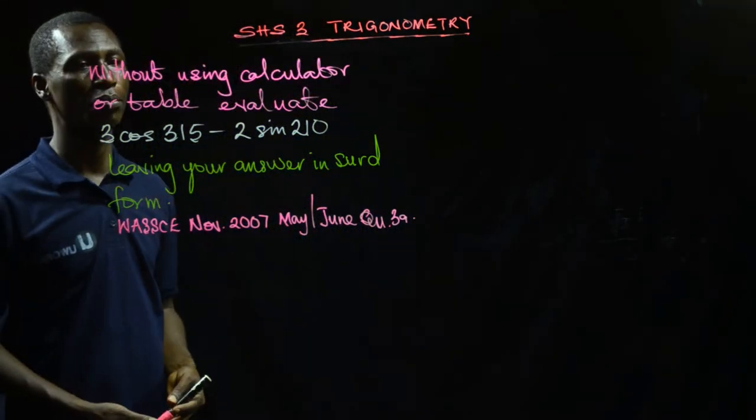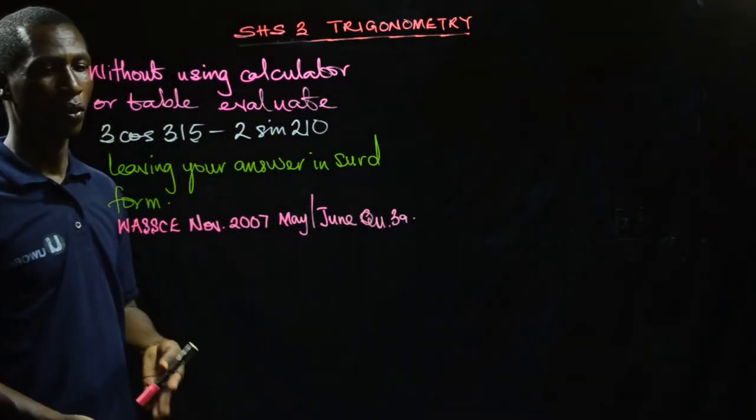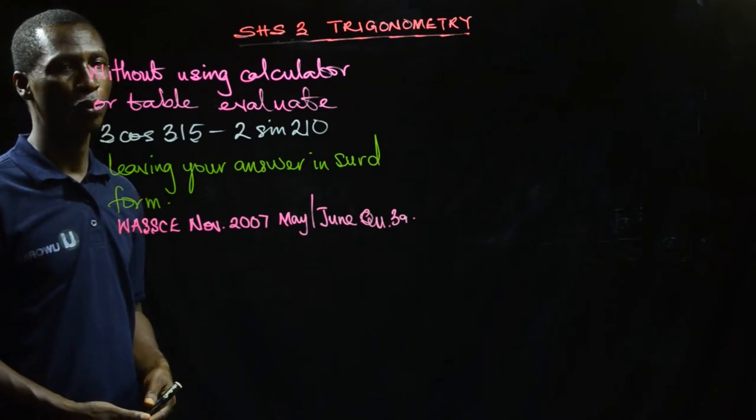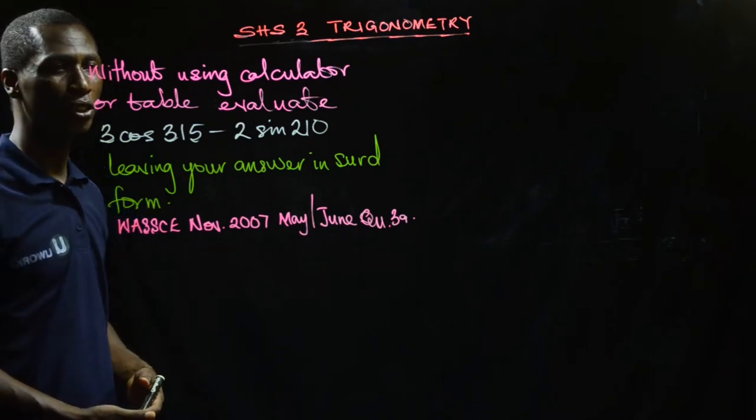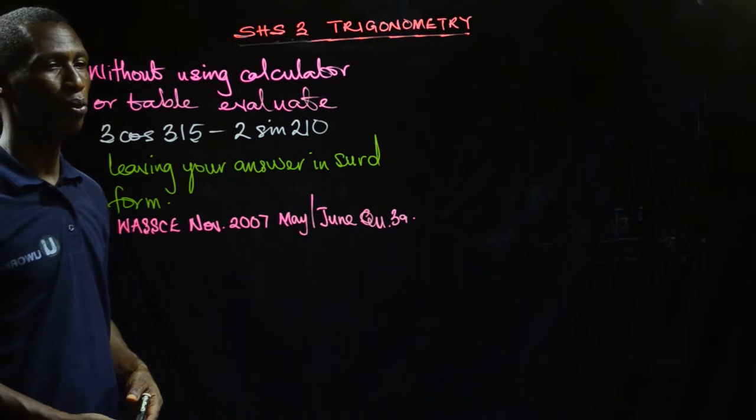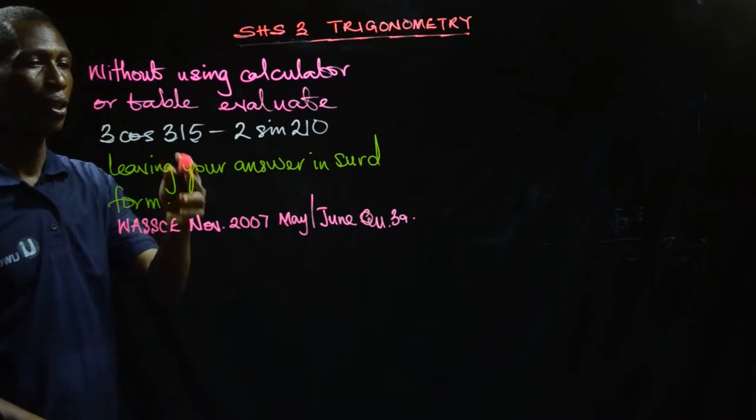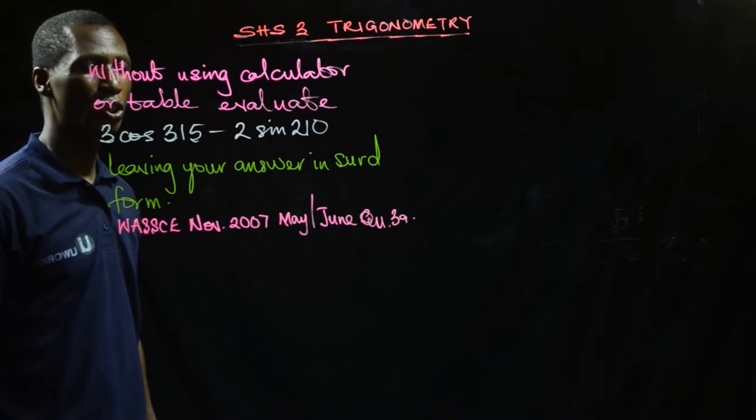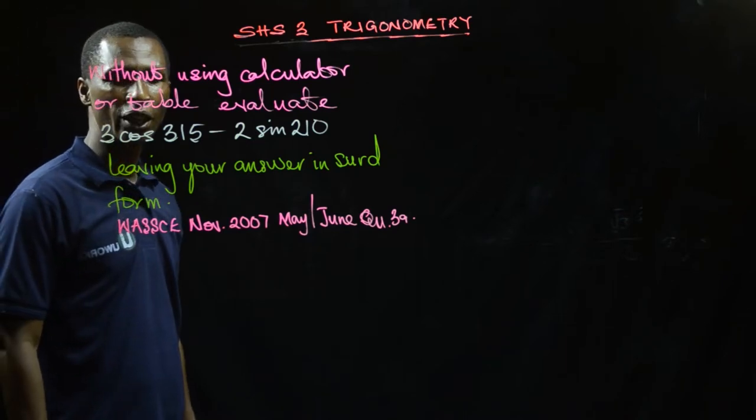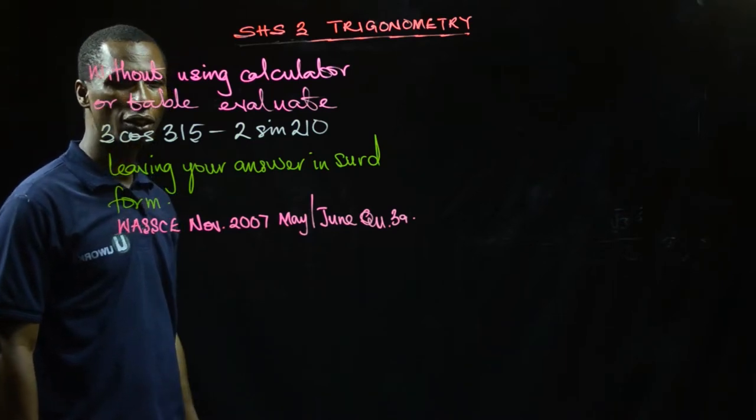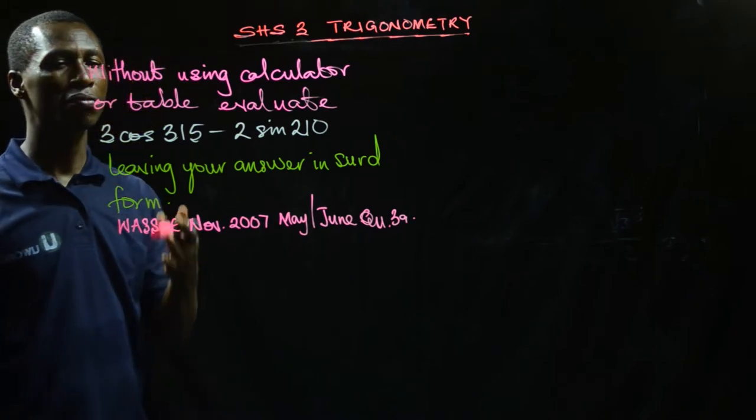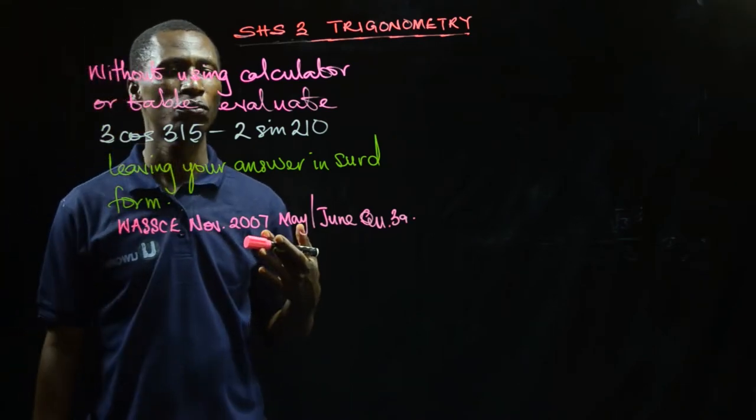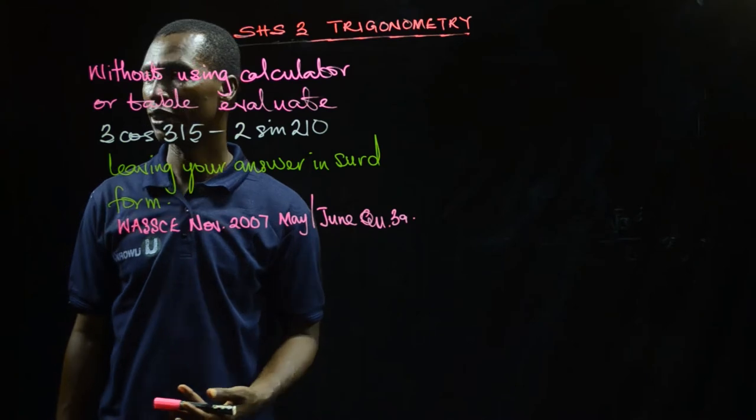Okay, so this is a CSEC question on trigonometry. We have been told that without using a calculator or table, we have to evaluate 3cos(315°) - 2sin(210°). We are supposed to leave our answer in surd form.